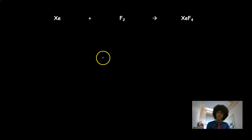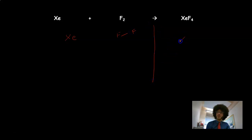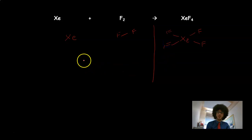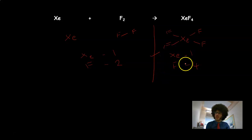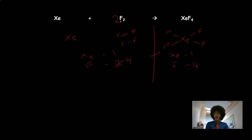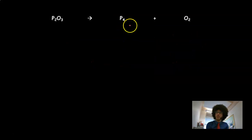Next: Xe + F₂ → XeF₄ (xenon tetrafluoride). Drawing it out: Xe is a single atom, F₂ is a fluorine molecule, and XeF₄ has four fluorines. Counting: Xe = 1 on both sides (no change needed). Fluorine: 2 on the left, 4 on the right. To balance, I need another 2 fluorines on the left, so I add another F₂ molecule — giving 2F₂ on the left. Now it's balanced: Xe + 2F₂ → XeF₄.